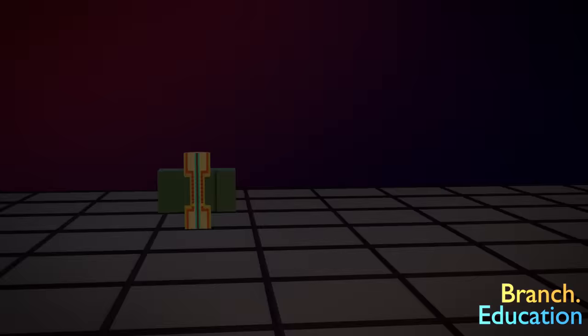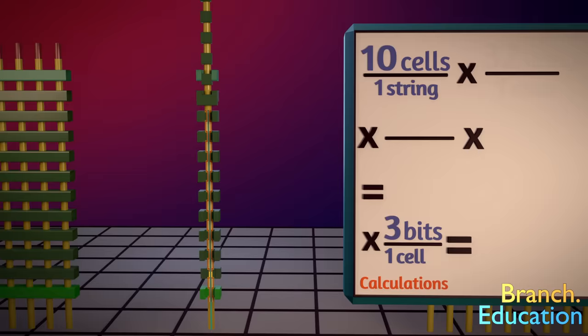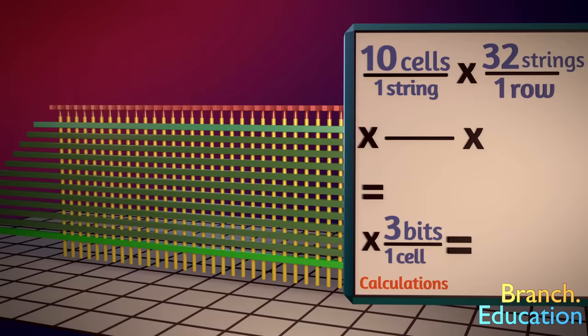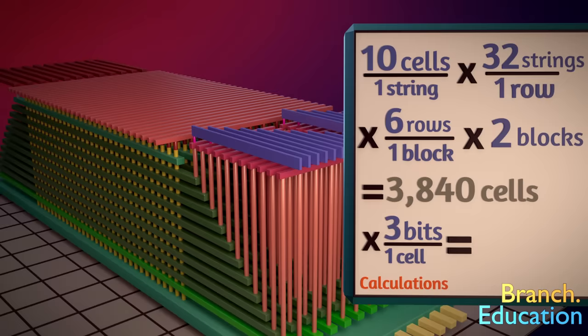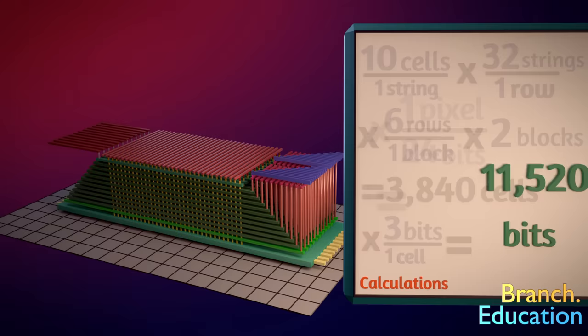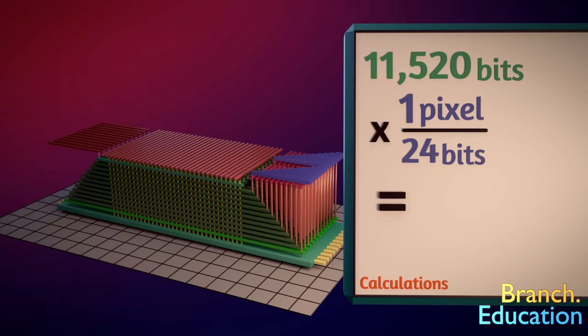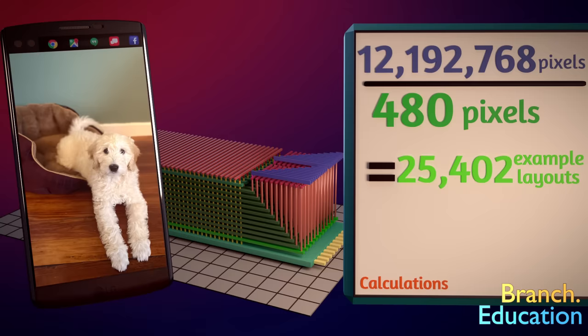So, let's quickly recap. Eight different levels of electrons are placed on charge traps in order to store three bits of information. These charge trap flash memory cells are stacked into strings ten cells tall, which are duplicated into pages of 32 strings in a row. Next, those pages of strings are duplicated until we have a block six rows deep. And here we're showing two blocks. Doing some quick multiplication, we find that there are 3,840 memory cells here, capable of storing a total of 11,520 bits. With each pixel in our picture requiring 24 bits, that means that we can store 480 pixels, or this much of our overall picture. That means you need about 25,000 times the size of this layout to store the contents of this single picture.